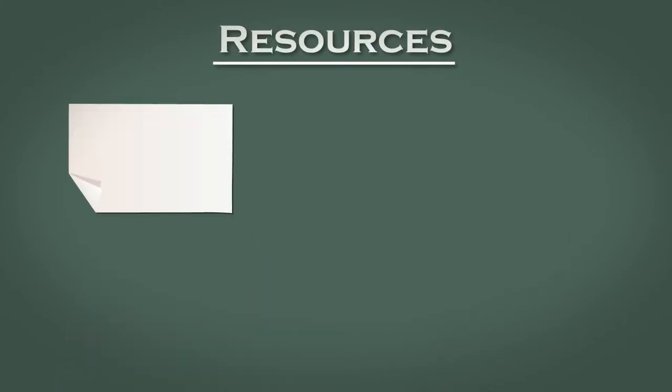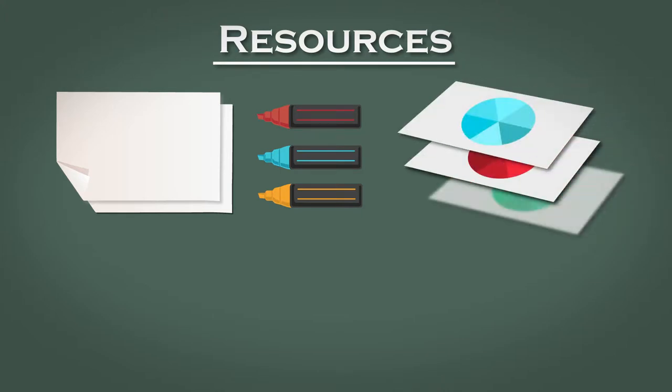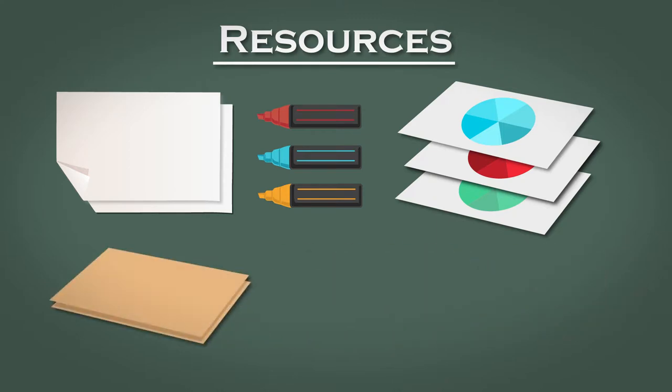You will need the following resources. Some flip chart paper and markers, and you will also need three spinning wheel templates: blue, red, and green, which you can download from the file section. You'll need to create these in advance of the retrospective, but they are quite simple. To make these spinning wheels you'll need some card, some glue, a pair of scissors, and some thumbtacks or drawing pins.